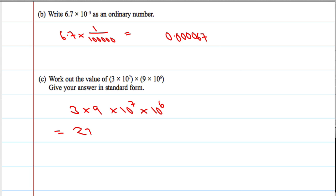3 times 9 is 27. 10 to the 7 by 10 to the 6, we've got the same base, and we've got powers. So, I can add the powers, 7 and 6, 13, so 27 by 10 to the power of 13, not in standard form yet.